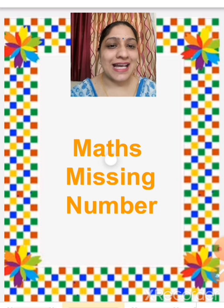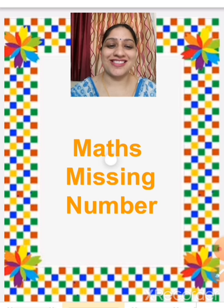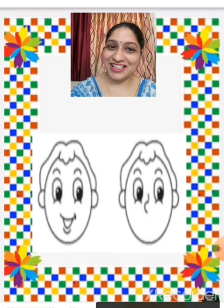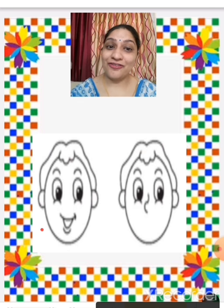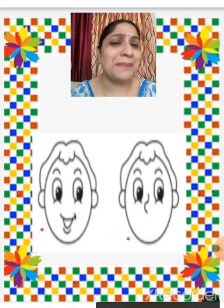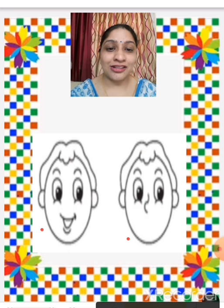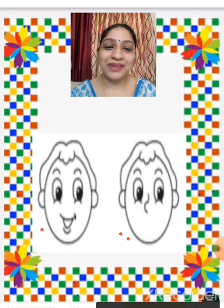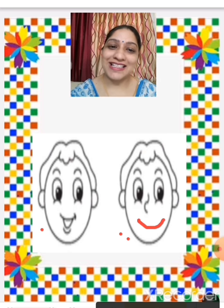Let us understand the concept of missing through pictures. What do you see children? This is the face of a boy. This is also the face of a boy, but what is missing here? Eyes are there, nose is there. And what is missing? In this face, the smile of the child is missing.